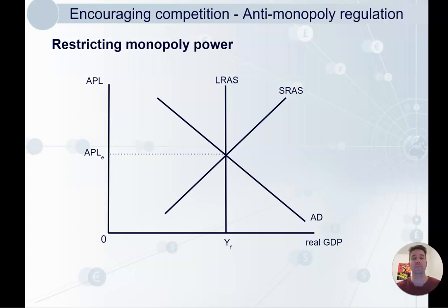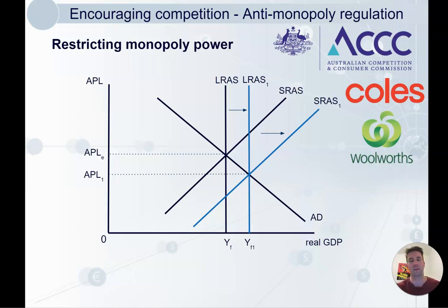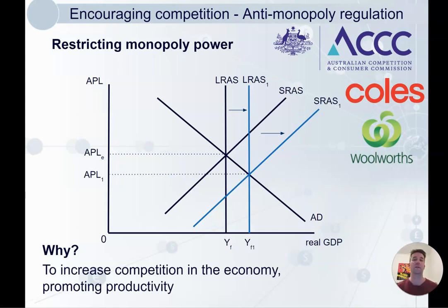Anti-monopoly regulation involves restricting monopoly power — that's what the ACCC does. They restrict mergers and make rules about how much power any one company can have. For example, a Coles-Woolworths merger would never be allowed because there would be too much market power. There's already an argument that too much market power in the supermarket industry is why prices are so high. More competition means firms must be more efficient and productive to make profits.